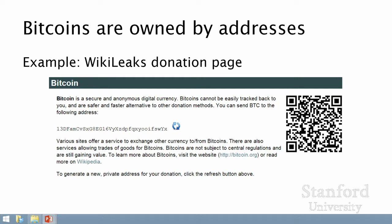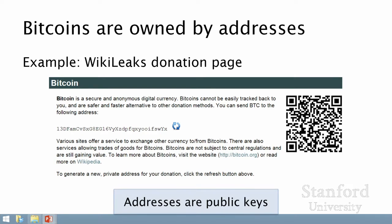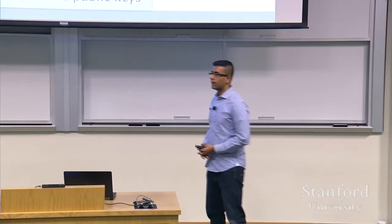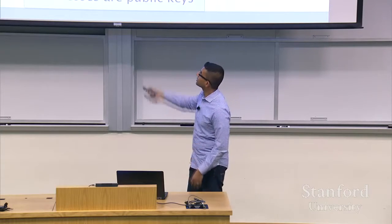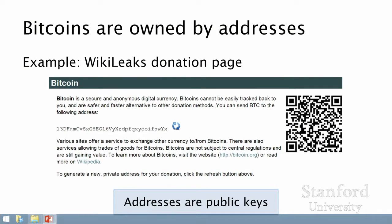So what WikiLeaks is saying is: send us Bitcoins, and in particular, send Bitcoins to this address. Why is this address so long? Why is it not a human-readable or human-memorable thing? Why does it have to be gibberish? Well, that's because addresses are, in fact, public keys. Money is sent to and from these public keys. The Bitcoin system has no idea that this string corresponds to WikiLeaks — that is completely external to the system.